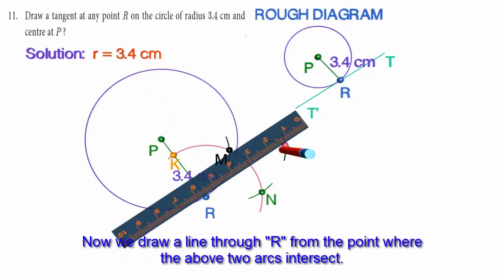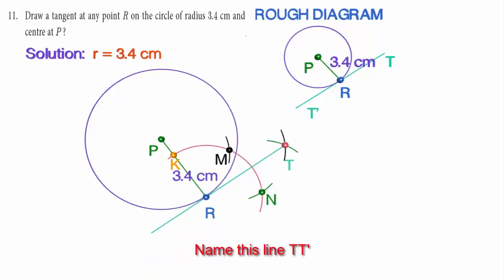Now, draw a line through R from the point where the above two arcs intersect. Name this line TT'. Here, TT' is the required tangent.